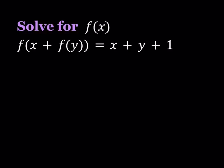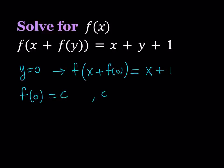So I'm going to first replace y with 0. And that's going to give me the following. f of x plus f of 0 equals x plus 0 plus 1 which is x plus 1. Now f of 0 is obviously a constant and it is defined. Let's go ahead and call this something else.